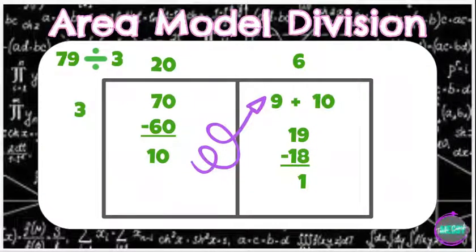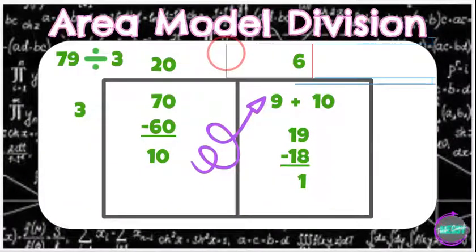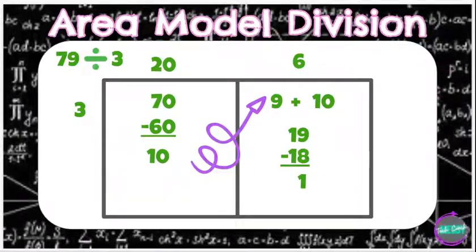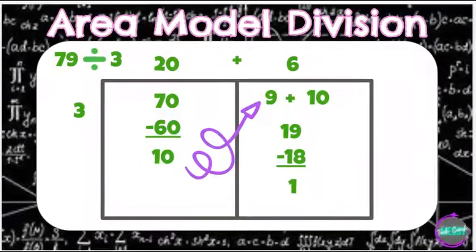Now, to find my actual answer for 79 divided by 3, I have to add what I got in the tens place and in the ones place. So I'm going to add 20 plus 6, which is going to give me an answer of 26.